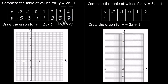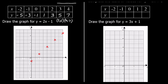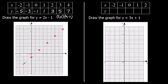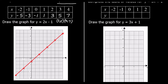Then join them up. So we've got 4, 7; 3, 5; 2, 3; 1, 1; 0, negative 1; negative 1, negative 3; and negative 2, negative 5. You can see that they've lined up in a straight line. If they didn't, we'd have to check for mistakes — if one of the points was off, there will be a mistake with the working out of that point. So there is our graph. We've joined it up with a ruler, with a straight line.